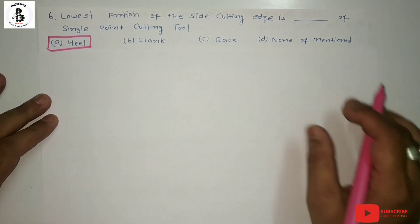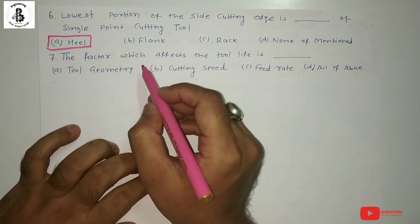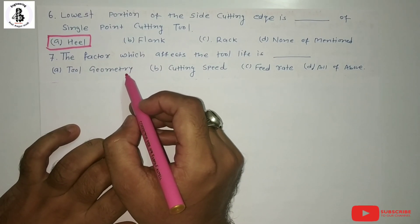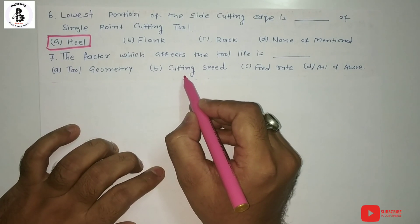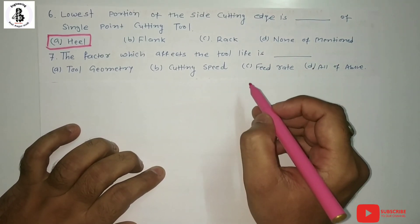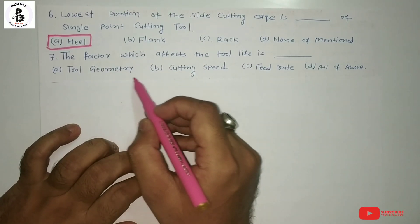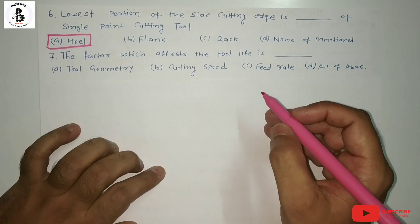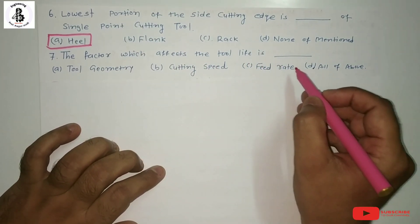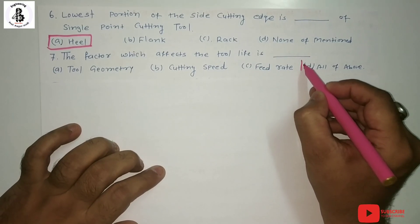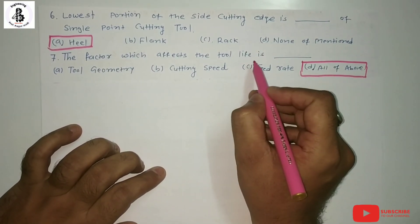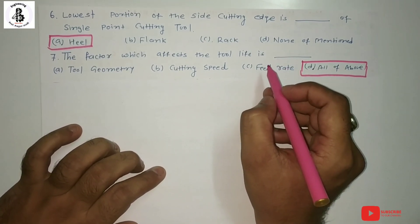Question 7: which factors affect tool life? Options: A) tool geometry, B) cutting speed, C) feed, D) all of the above. In detail, tool geometry, cutting speed, feed, and depth of cut all act as influencing parameters on tool life. So the answer is D, all of the above. For more detail, refer to the link in the description.